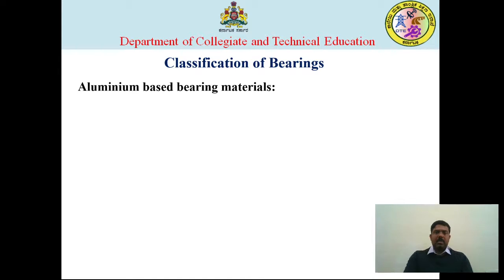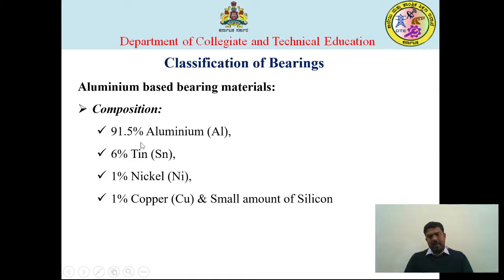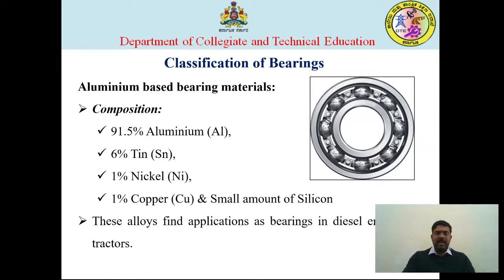Moving on to aluminium-based bearing material. Since it is aluminium-based, the maximum composition is from aluminium — 91.5% aluminium. It also contains 6% of tin, 1% of nickel, 1% of copper, and a small amount of silicon. Tin, nickel and copper are added in a smaller percentage. These are found in applications in bearings in diesel engines and tractors. You can see a sectional view of a bearing made up of aluminium bearing material.